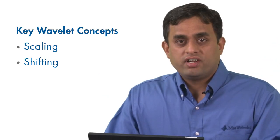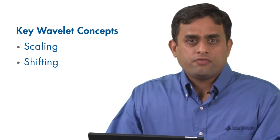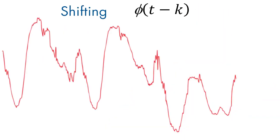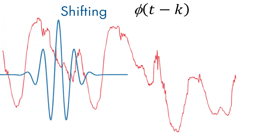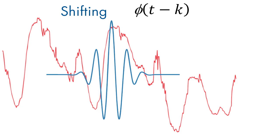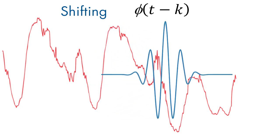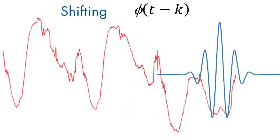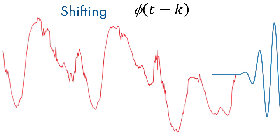Next, we will discuss shifting. Shifting a wavelet simply means delaying or advancing the onset of the wavelet along the length of the signal. A shifted wavelet, represented using this notation, means that the wavelet is shifted and centered at k. We need to shift the wavelet to align with the feature we are looking for in a signal.